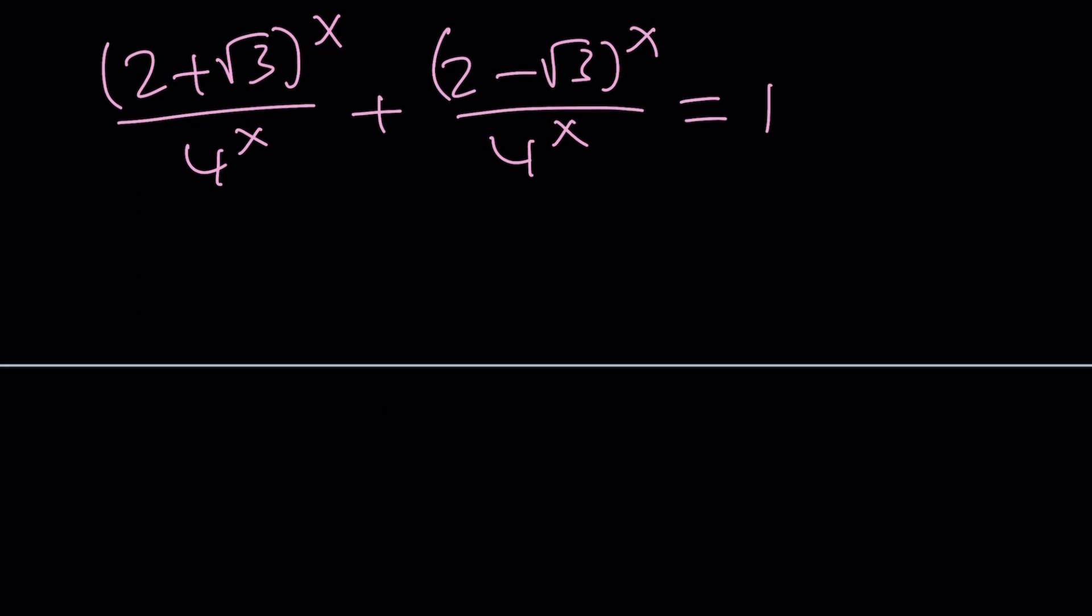And then we're going to use a common exponent and write this as $\left(\frac{2+\sqrt{3}}{4}\right)^x + \left(\frac{2-\sqrt{3}}{4}\right)^x = 1$. Great. Now we do have two expressions on the left-hand side. The bases are now a little different.